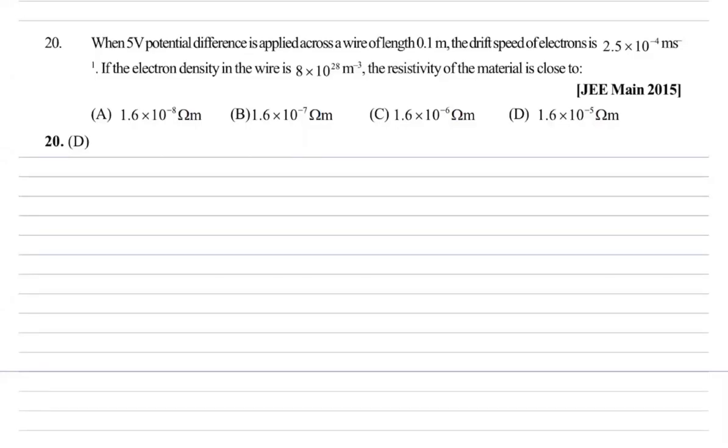Question number 20 says when a 5 volt potential difference is applied across a wire of length 0.1 meter, the drift speed of electrons is given. Electron density is also given in the wire and we need to find out the resistivity of the material.